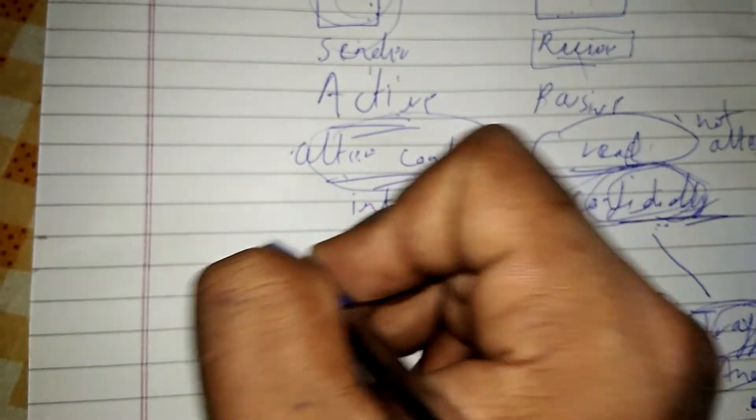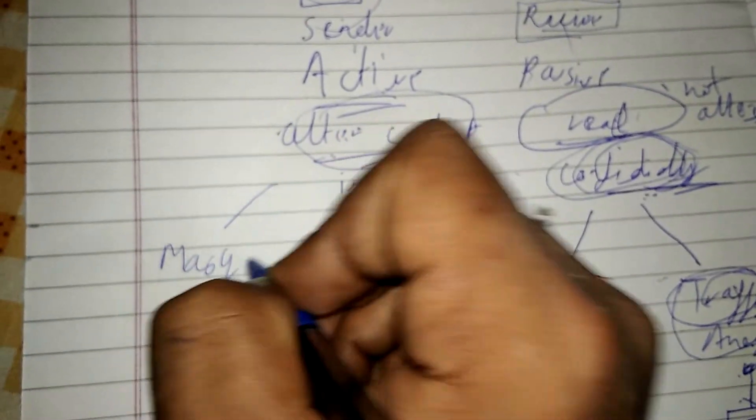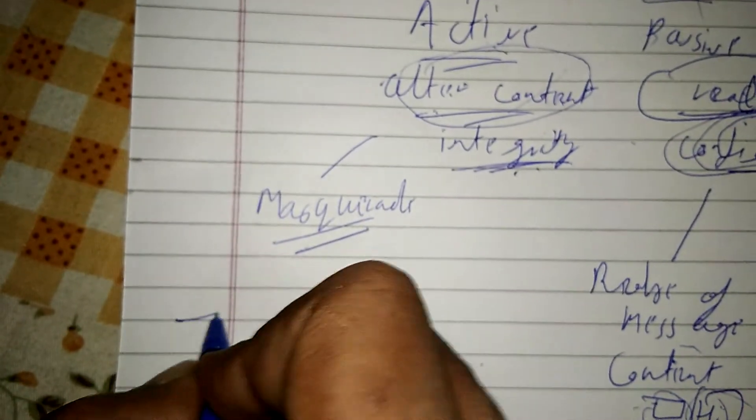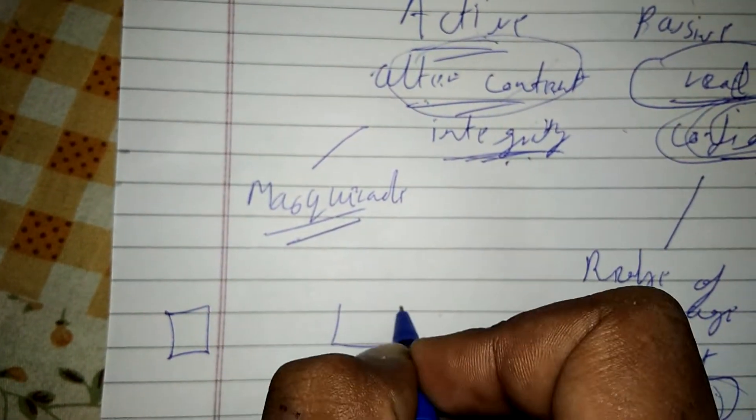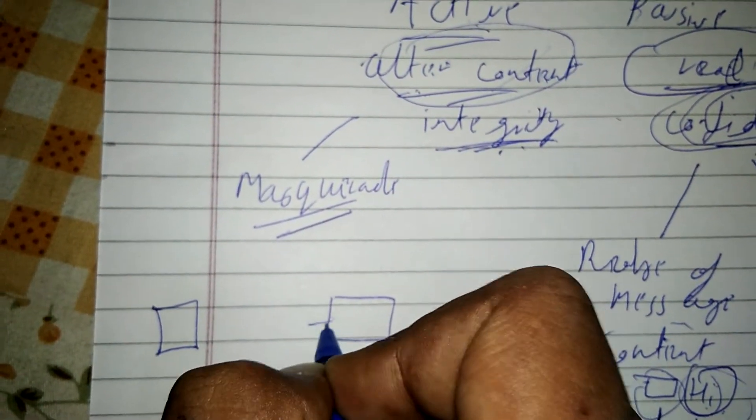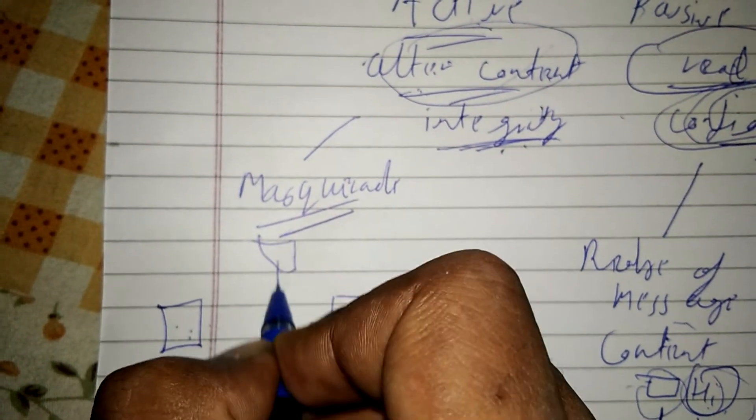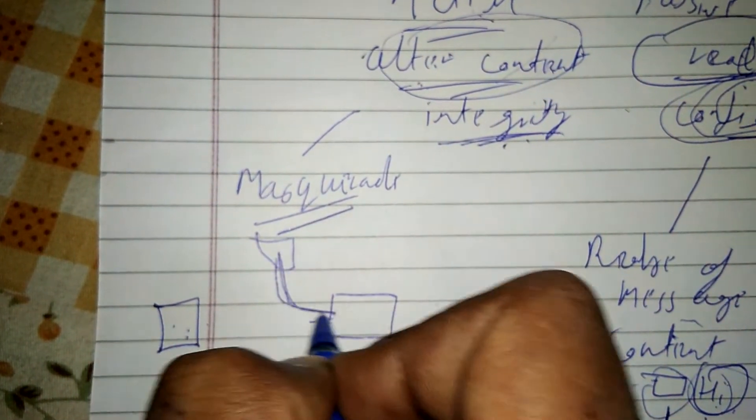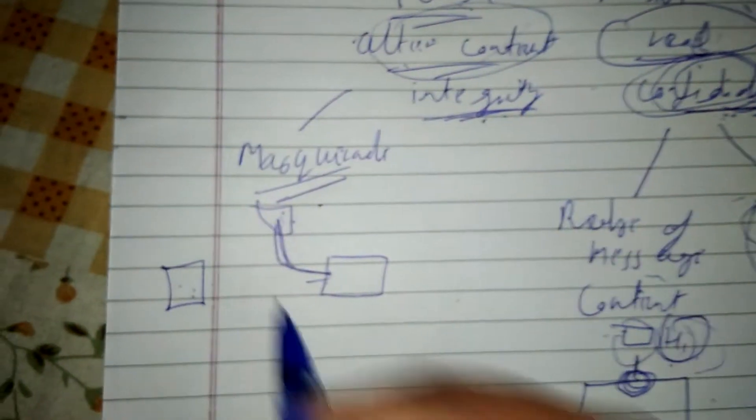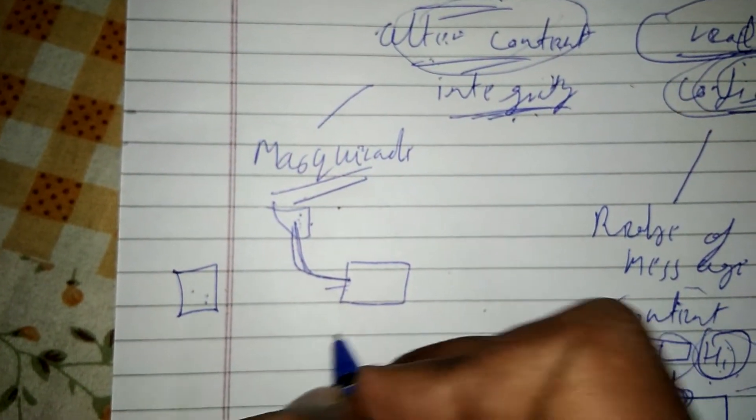Now let us talk about active attacks. There are four kinds. The first is masquerade. In this attack, the receiver assumes they are getting the message from the sender, but somebody else sends the message pretending to be the sender. This is masquerade.